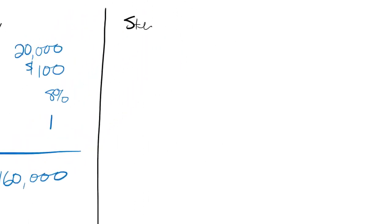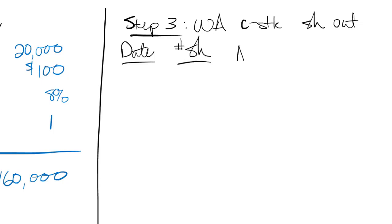Step number three is to get my weighted average common stock shares outstanding. And again, I'm going to make my same table. So I need a date of the change. I need the number of shares. The adjustments for stock splits and dividends. We'll get a fraction of the year. And finally, our weighted average. We always start with January 1 or whatever our fiscal year start is. This company started with 200,000 shares on January 1.